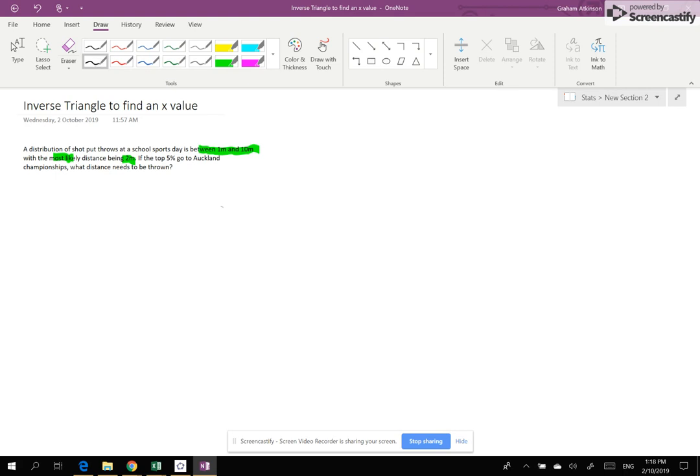So that tells me it's a triangle distribution. If I think about my triangle distribution, there's my 1 meter, there's my 2 meters, and there's my 10 meters, and that's how I end up with my triangle. It tells me the top 5%, so the top 5% will be over here and that's the number I don't know. So I need to work out that number.